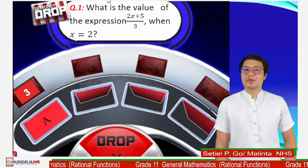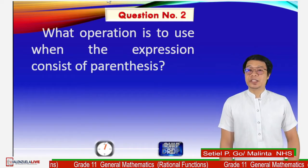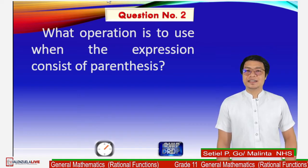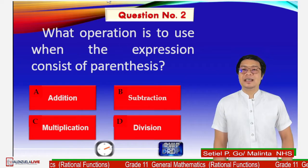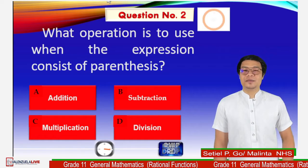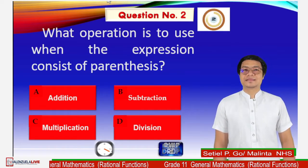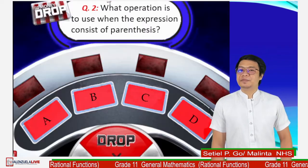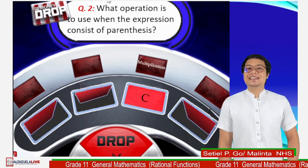Let's solve question number 2. What operation is to be used when the expression consists of parentheses? These are the choices: A, addition; B, subtraction; C, multiplication; or letter D, division. 5 seconds. Go! Time's up. Drop your answers. The correct answer is C, multiplication.